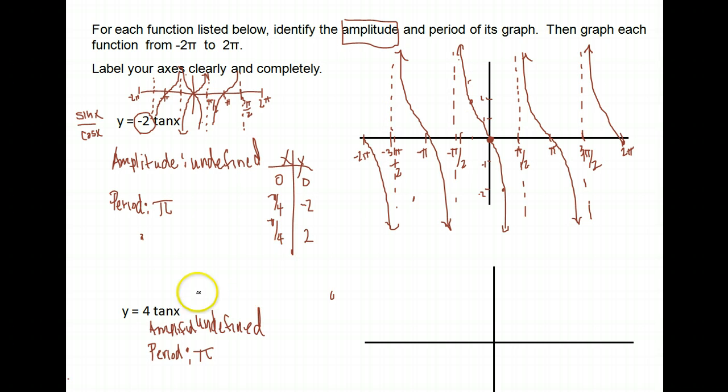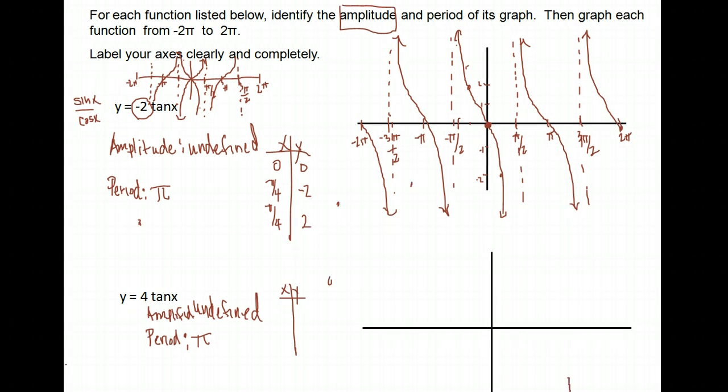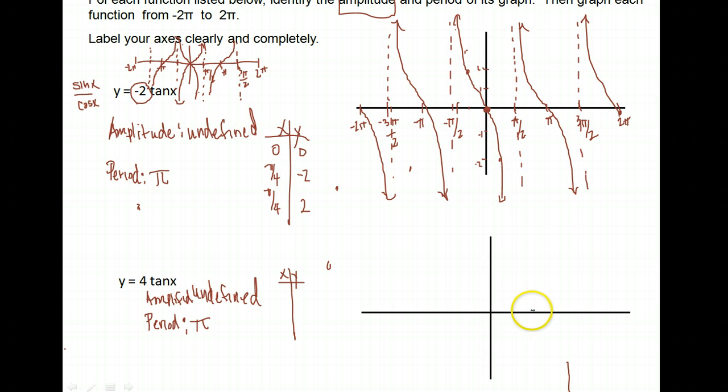All right, let's take a look at our next one. 4 tangent x is what we're asked to graph. Again, if you want to be a little more precise, you can use just the shape of the tangent graph and say, well, if I multiply by 4, that's going to stretch it a little bit. But if you want to be more precise in your graph, you can plot points. We do need to prepare our axes.